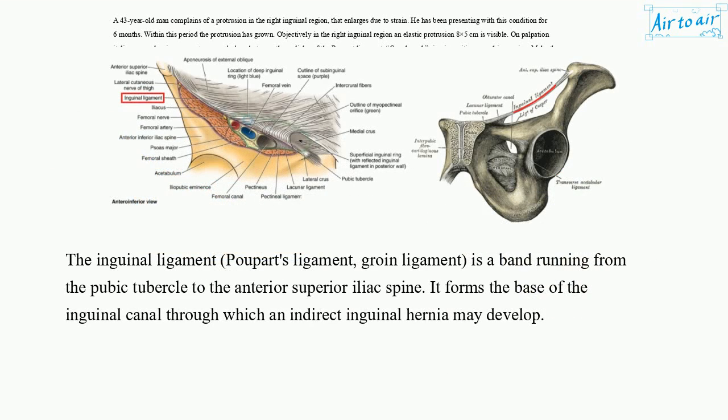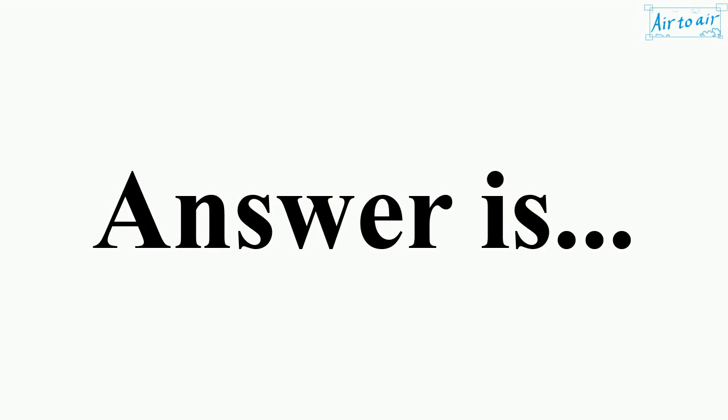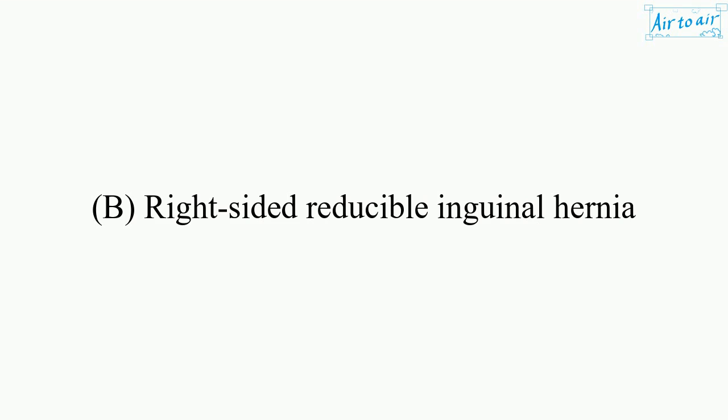The inguinal ligament, also known as Poupart's ligament or groin ligament, is a band running from the pubic tubercle to the anterior superior iliac spine. It forms the base of the inguinal canal, through which an indirect inguinal hernia may develop. The answer is B: right-sided reducible inguinal hernia.